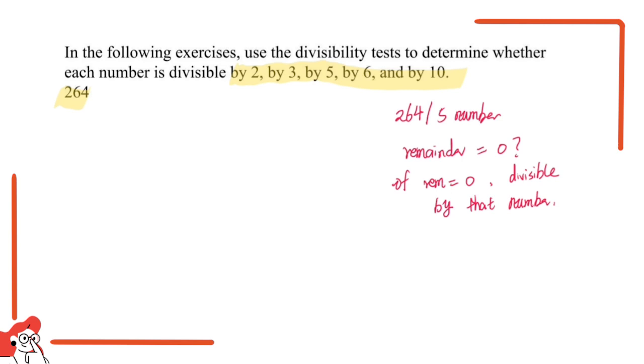We first do 264 over 2. We simply should get 132, and the remainder is 0, so 2 is one of the answers. Next we do 3. We should have 88 here, so in order to have 24 which is closest to 26, what's left is 24 again. We put 8 right here and the remainder is 0, so 3 is another answer.